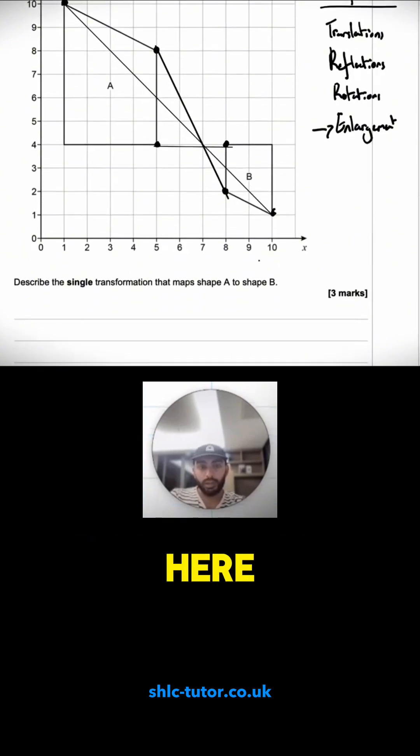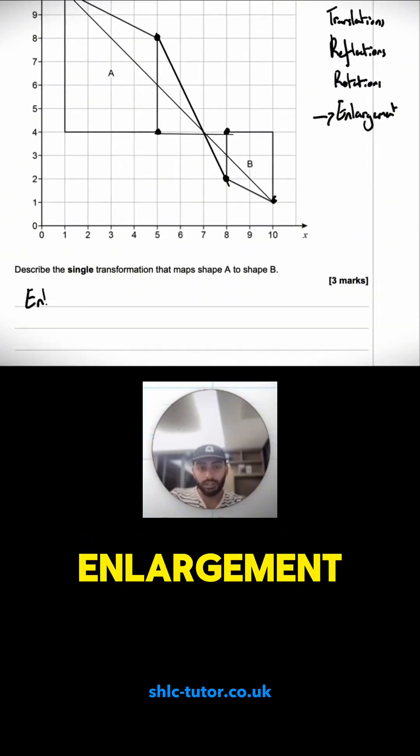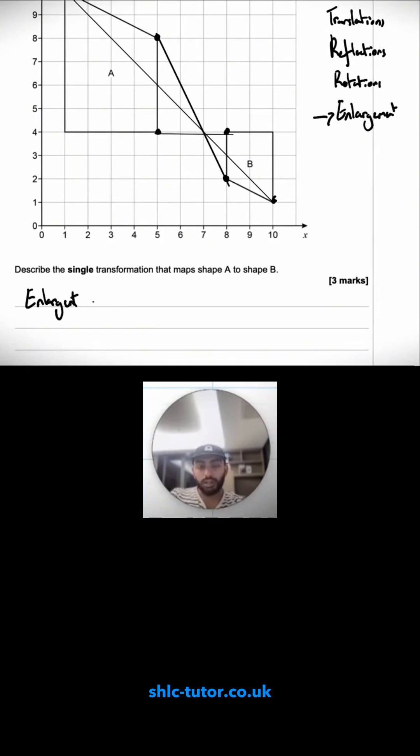So there's three marks you can get here. The first mark you get is for writing enlargement. The second mark you get is writing the centre of enlargement. And this is at 7-4.